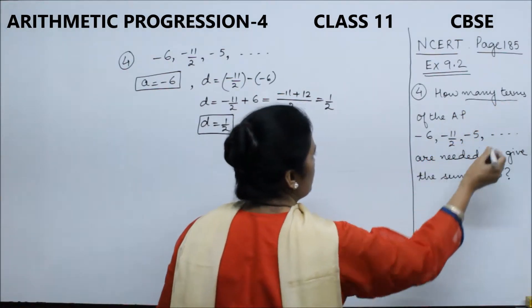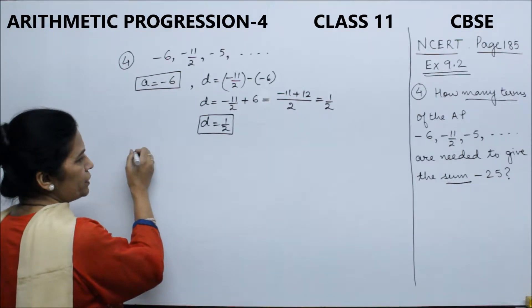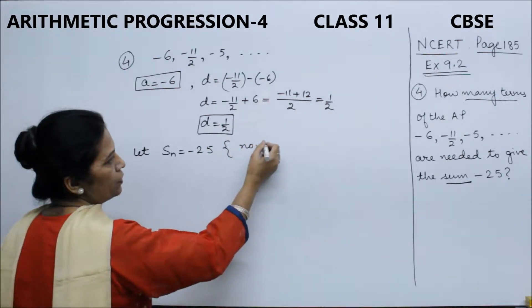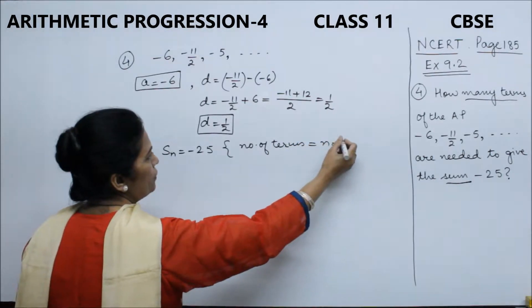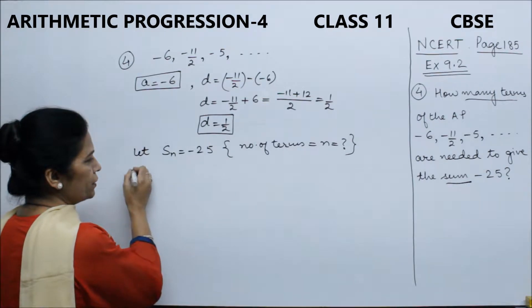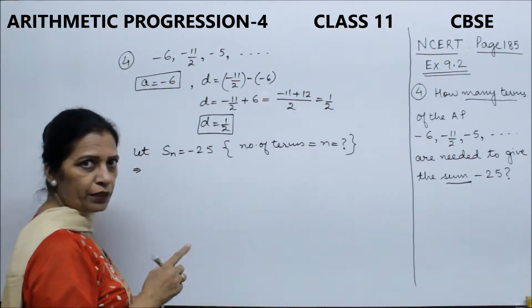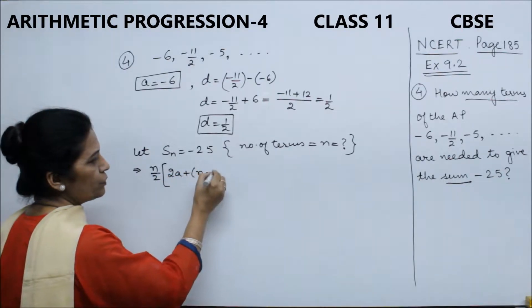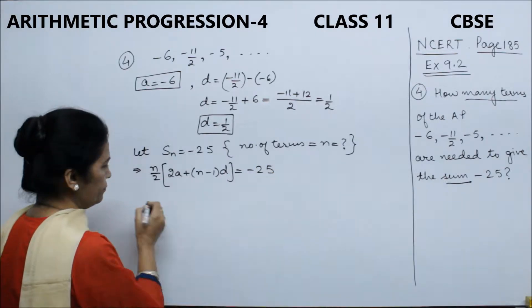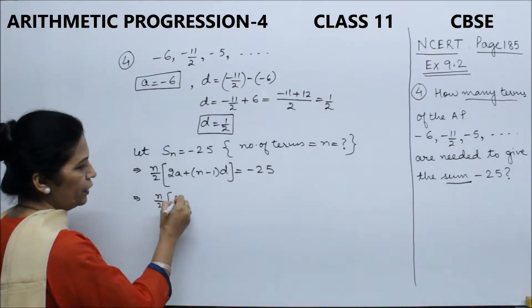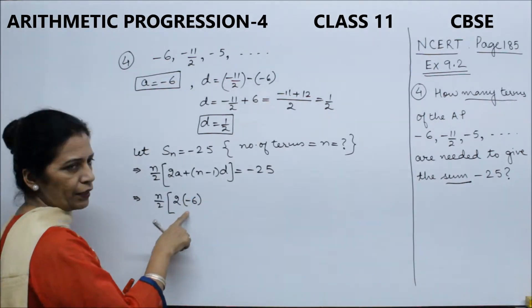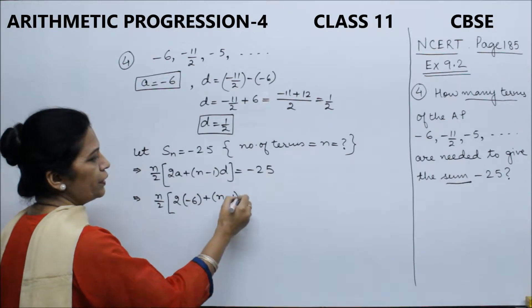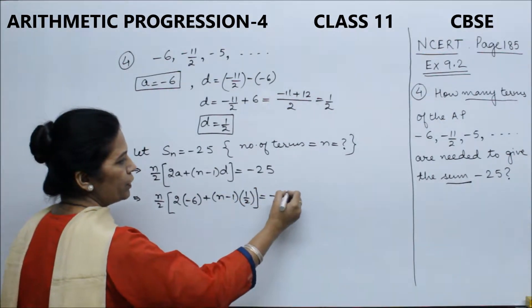Now we need to find how many terms are needed to make the sum -25. We use the Sn formula. Since we have a and d, the formula is: Sn = n/2[2a + (n-1)d] = -25. Substituting the values: n/2[2(-6) + (n-1)(1/2)] = -25. We put brackets when we have negative values.